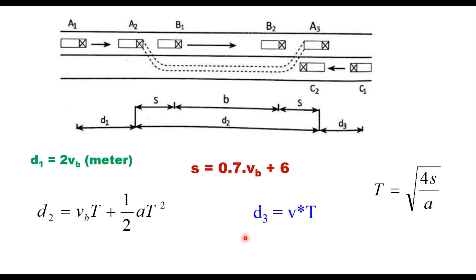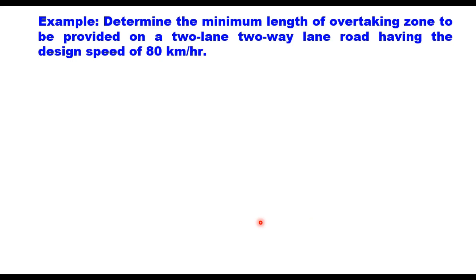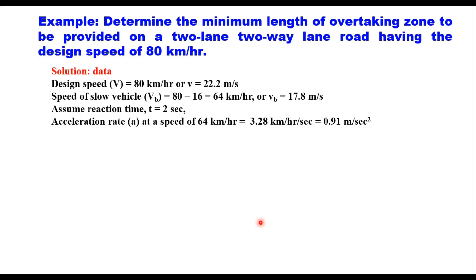Once d1, d2, and d3 are known, the overtaking sight distance is their sum. Here is an example: determine the minimum length of overtaking zone on a two-lane two-way road with a design speed of 80 km/h. The design speed v is 80 km/h, which converts to 22.2 m/s. The slow vehicle speed is 80 minus 16 = 64 km/h, or 17.8 m/s. Reaction time is assumed as 2 seconds.